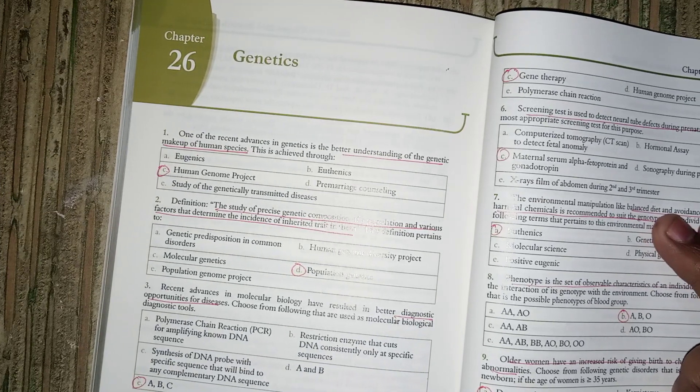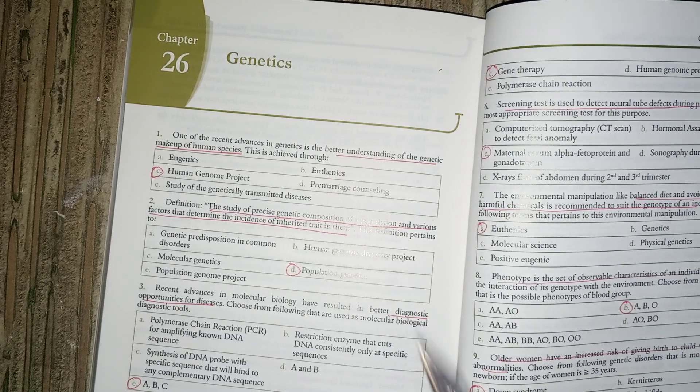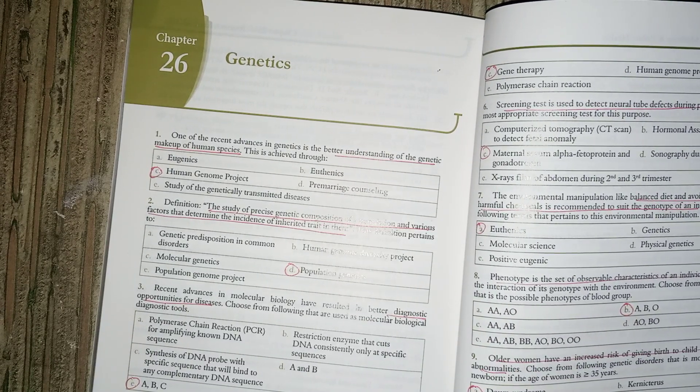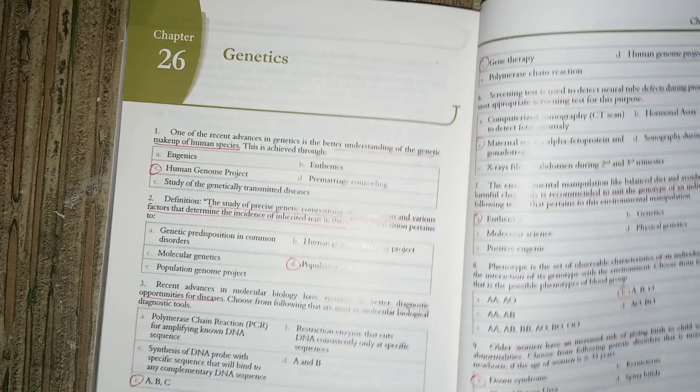In today's video, we will start genetics MCQ. One of the recent advancements in genetics is the better understanding of the genetic makeup of human species. The genetic makeup of the human species is the Human Genome Project.